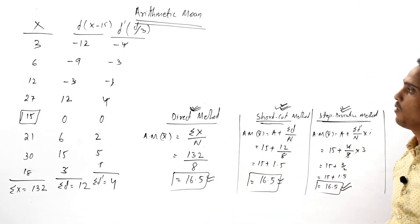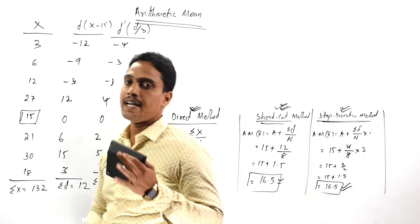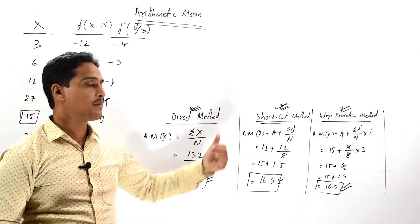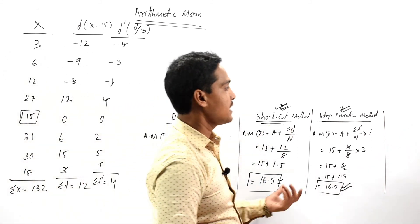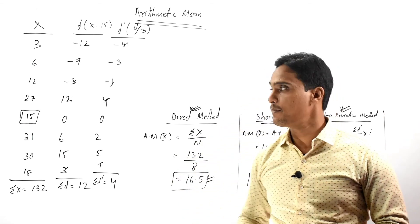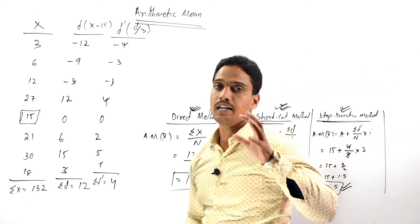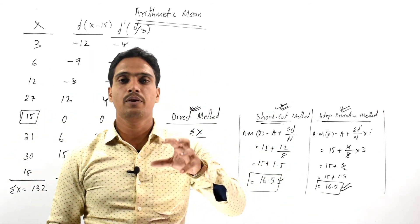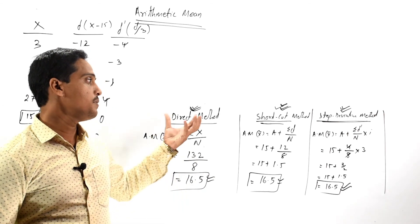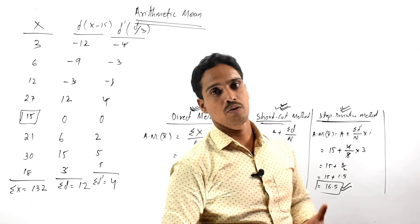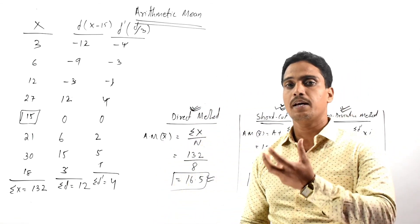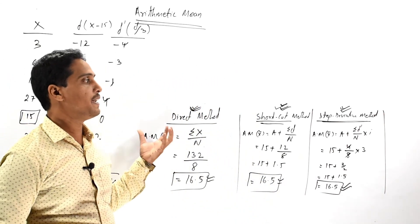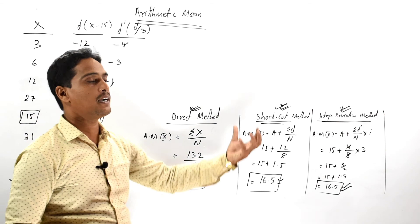So these are all about the computation of arithmetic mean of individual series under the direct method, shortcut method, and step deviation method. Repeatedly watch this video to clear your doubts or to develop your knowledge, and share it with your friends to give them the opportunity to enhance their knowledge on computation of arithmetic mean of an individual series under different methods. Thank you.